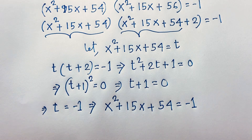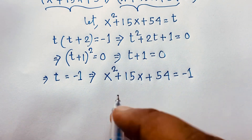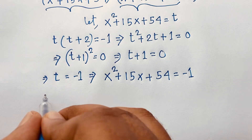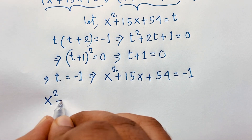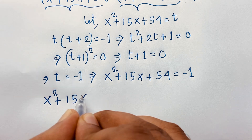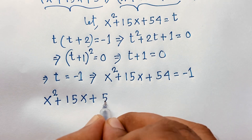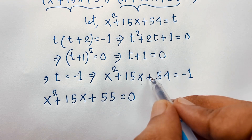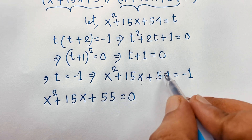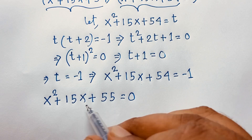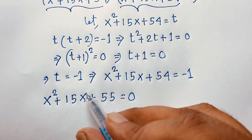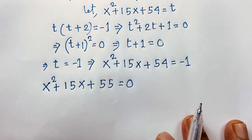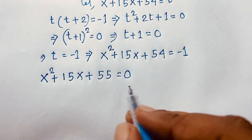This gives us the quadratic equation x² + 15x + 55 = 0, since moving -1 to the left side gives 54 + 1 = 55. Now we apply the quadratic formula to solve this equation.